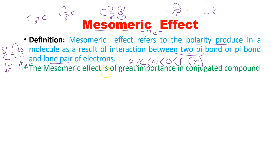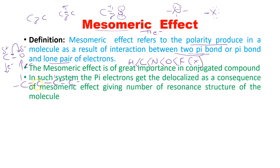This effect is of great importance in conjugated compounds. A conjugated compound has alternating double and single bonds — carbon-carbon double bond, single bond, double bond, and so on. In such a system, the pi electrons get delocalized as a consequence of the mesomeric effect, giving a number of resonance structures in a molecule.